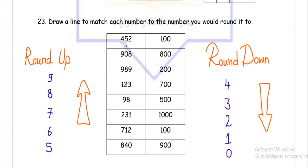Let's start with the first number. We've got 452. Since most of the numbers on the right side are in hundreds, I'm going to round to the nearest hundred. I've got 452: 4 in the hundreds, 5 is in the tens. What I care about now is the 5. Because of the 5, I'm going to round up 452 to 500. I will match 452 to 500.